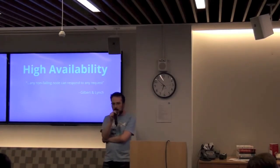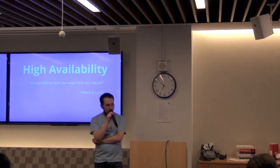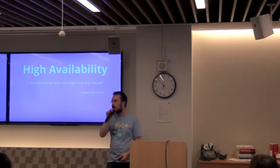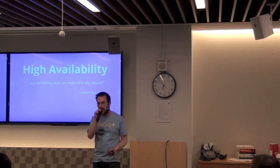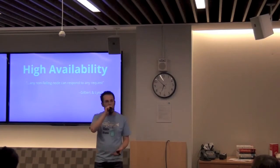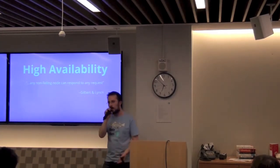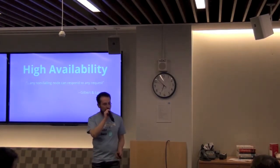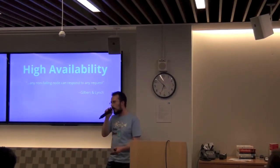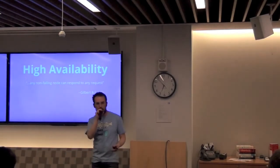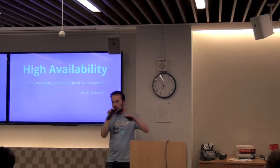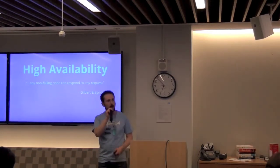Riak is designed for high availability. The formal definition is: any non-failing node can respond to any request. Failures happen constantly — hardware failures, network partitions. Research from large data centers shows that mean time between failures keeps shrinking but never reaches zero. Riak has fault-tolerance behaviors like hinted handoff: if a node is offline during a write, a fallback node takes the write request and hands the data back to its original owner once the failure is resolved.